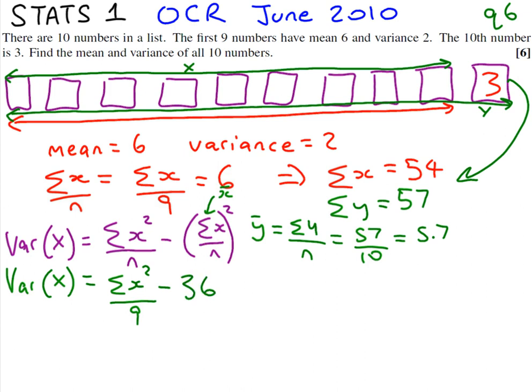We know this all equals 2, because we're told that in the question. So we rearrange this equation — we add the 36 and times by 9 — to get that the sum of x squared is going to be 342. You can verify that on your calculator by simplifying this equation.